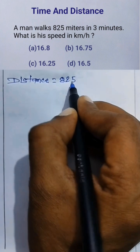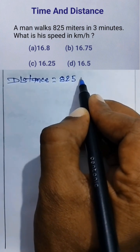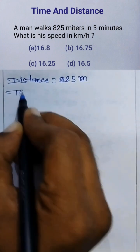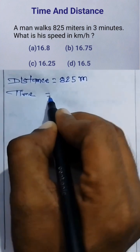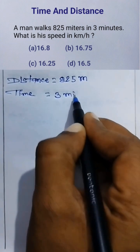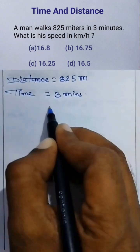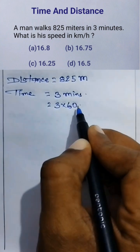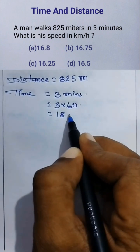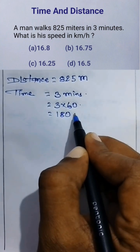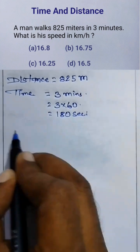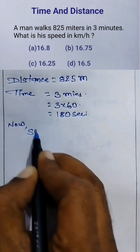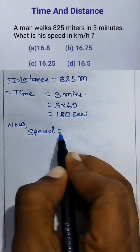Distance equals 825 meters and time is three minutes, which equals 3 into 60, equals 180 seconds. Now, speed equals distance by time.